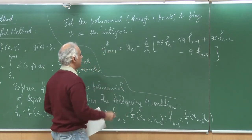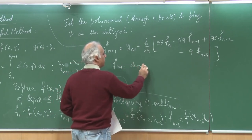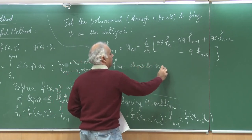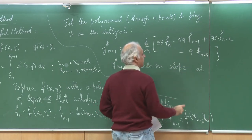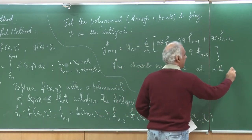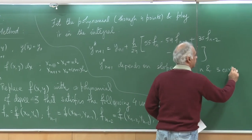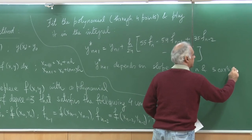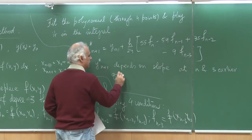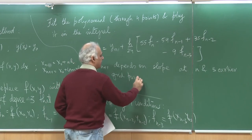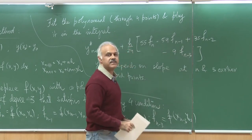Fitting the polynomial through four points and plugging it into the integral, I can show that y*_{n+1} is given as y_n plus h/24 times (55 f_n minus 59 f_{n-1} plus 35 f_{n-2} minus 9 f_{n-3}). You can see that y*_{n+1} now depends on the slope at n and three earlier grid points: n-1, n-2, and n-3.